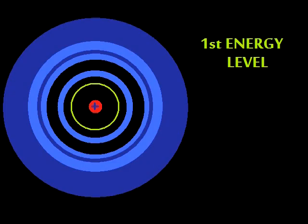The first energy level is really small. It hardly has room for electrons at all. An S sublevel is all — there are two electrons that constantly whizz.